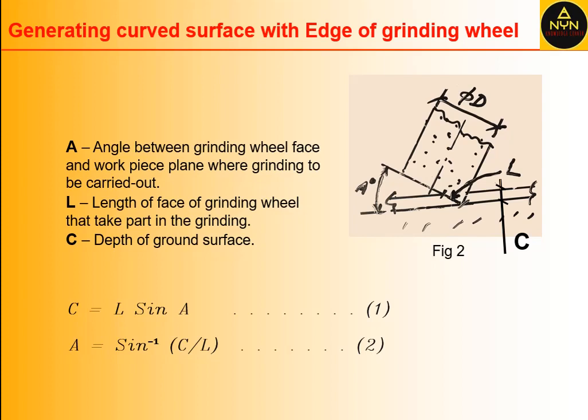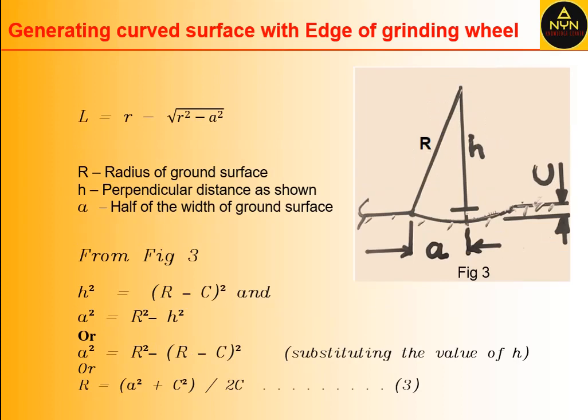Another relation we have is L = r - √(r² - a²), where a is half the width of the ground surface.